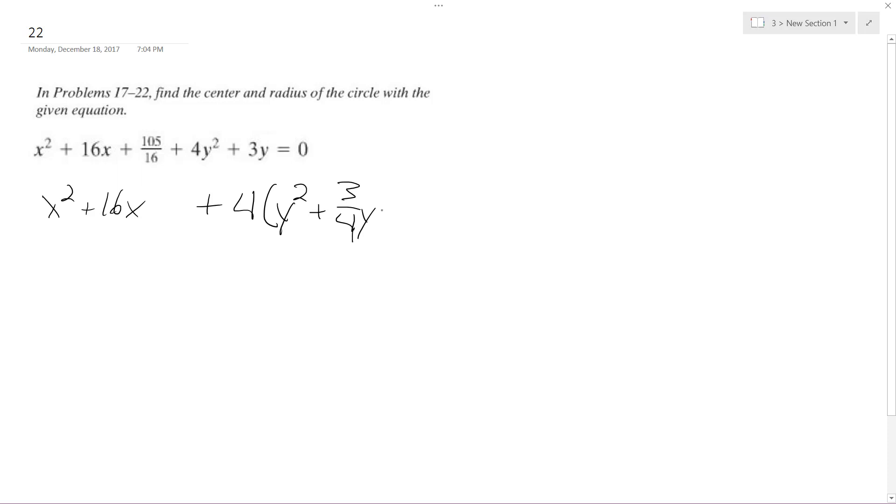So half of this squared, it'd be three over eight. That ends up being nine over 64. Multiply that times four and I get negative 105 over 16.